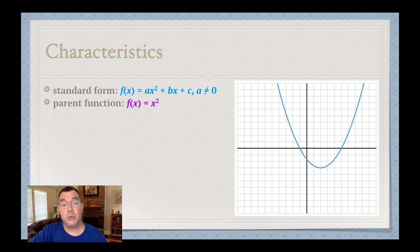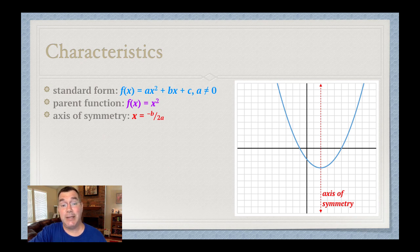The parent function, which is the simplest version of that function family, is f of x or y equals x squared. The axis of symmetry, which I draw with that red line over there, cuts the parabola in half vertically, and so the equation of that vertical line is x equals negative b over 2a. You would plug in your a and b from that blue function into that formula, and you would get the constant that goes on the right.